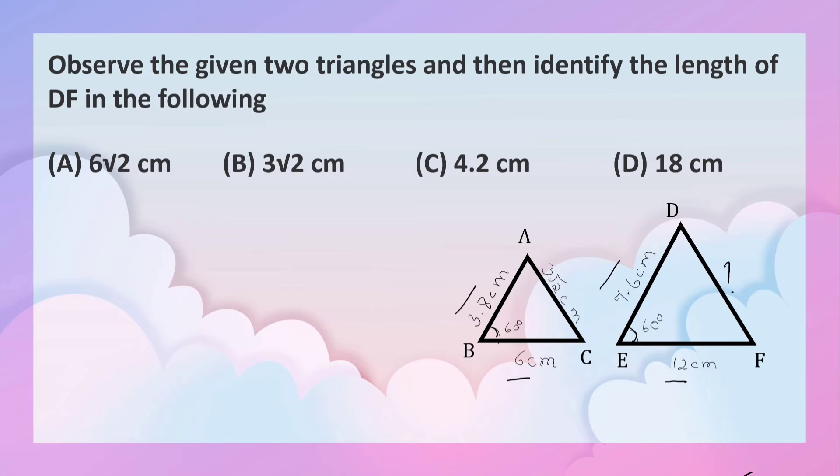Since 3.8 into 2 is 7.6, 6 into 2 is 12, 3 root 2 into 2, what is that? 6 root 2 cm. So, the correct option is option A. Option A.